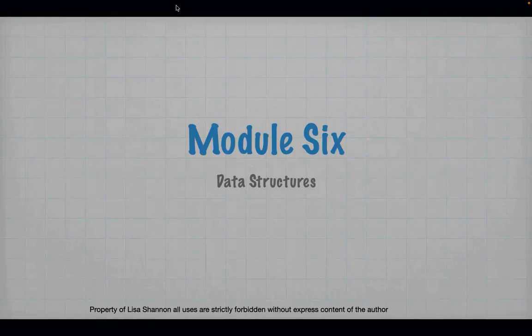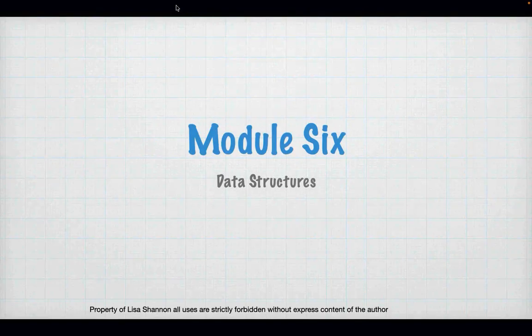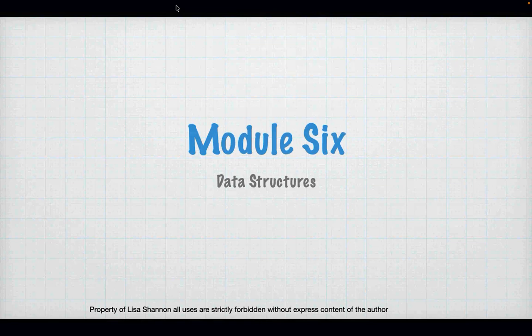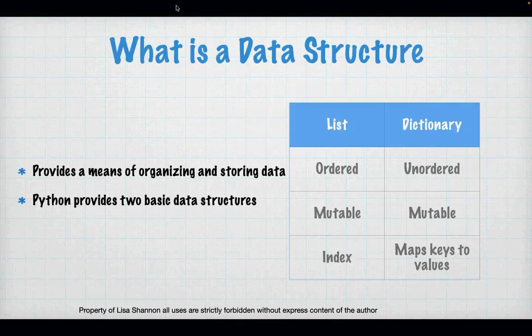This week we start talking about something called data structures. Data structures are just ways to organize data so you can pass it around as a group, treat it as a group. Python has two main data structures: lists and dictionaries.